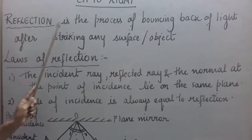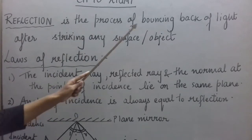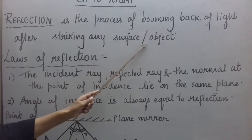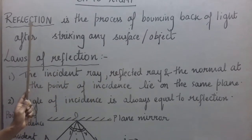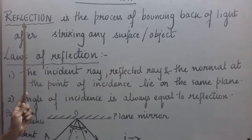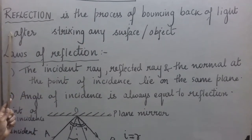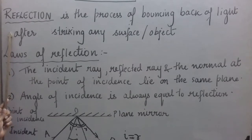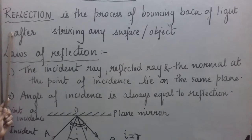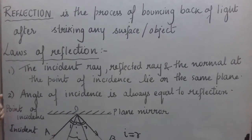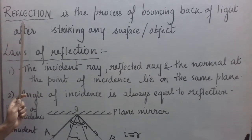What is reflection? It is the process of bouncing back of light after striking any surface or an object. Just like when we throw a ball on the ground or a wall it bounces back, similarly when light falls on any object it bounces back. A part of light may bounce back or maximum light may bounce back depending upon the object at which it strikes.